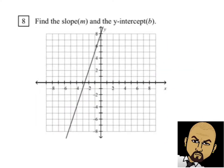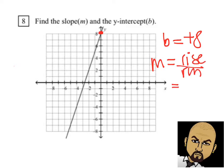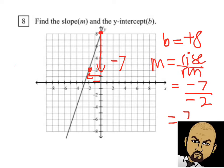Let's look at problem number 8. Find the y-intercept — in this case it is on the graph, and our y-intercept is positive 8. For the slope, we make a slope triangle. Slope is rise over run. This time I go down and to the left, so both rise and run are negative: negative 7 rise and negative 2 run. That gives a slope of seven halves.